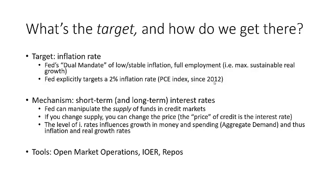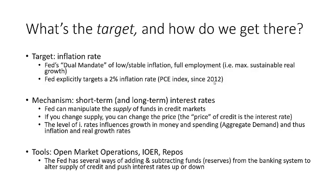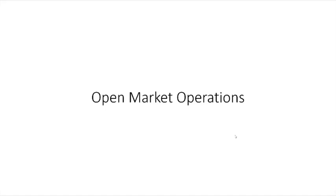The tools the Fed uses are: open market operations, interest on excess reserves, and repos — which are basically forms of lending or borrowing that the Fed engages in with banks. The Fed has several ways to add and subtract funds from the banking system to alter the supply of credit and move interest rates up or down. Now we want to go into details about how interest rate targeting works, starting with open market operations.